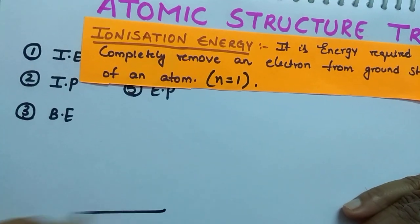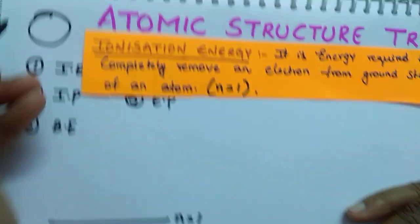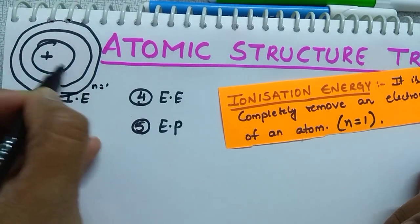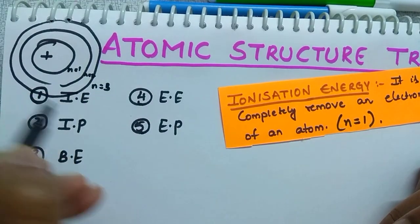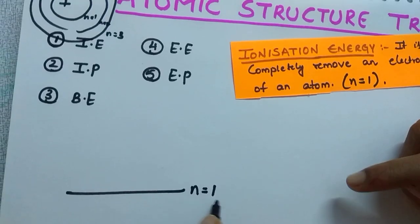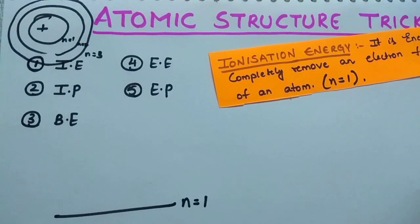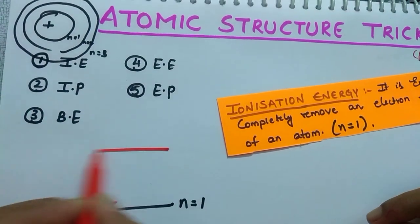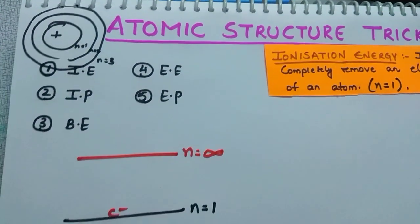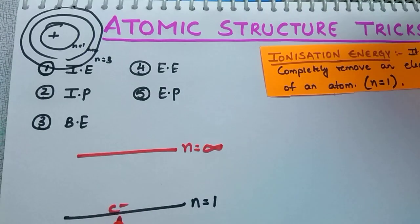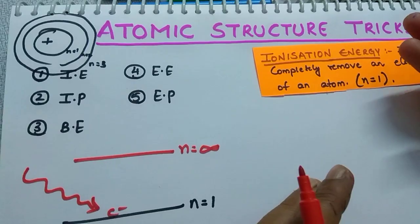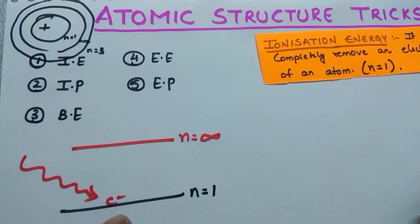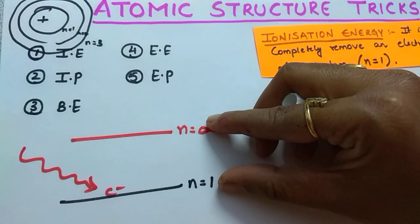Let us see here. Suppose this is the first level — this is the atom, here the nucleus is there, then first level n equal to 1, second level n equal to 2, third level n equal to 3, fourth level n equal to 4, and so on. Suppose the electron is on the first level. What we want to do is remove this electron completely — we want to bring it to the n equal to infinity level. To bring this electron out we should give some amount of energy in the form of photons, so that the electron is ejected out. The amount of energy required completely depends upon the energy gap between the two levels.